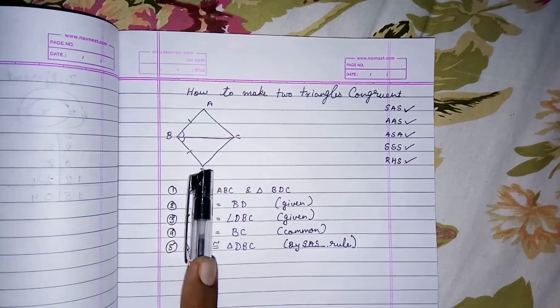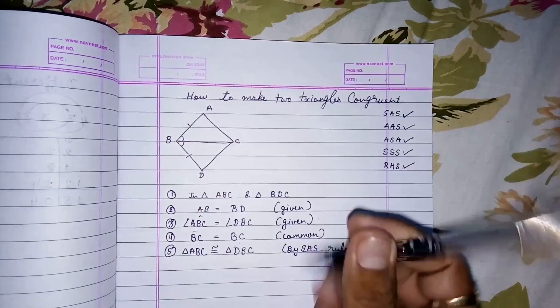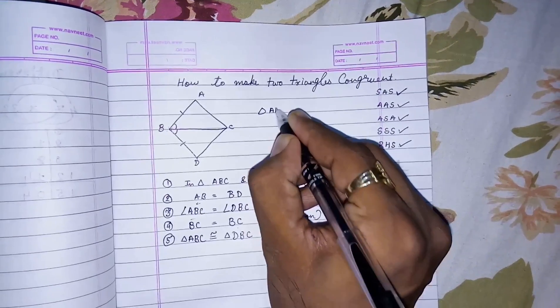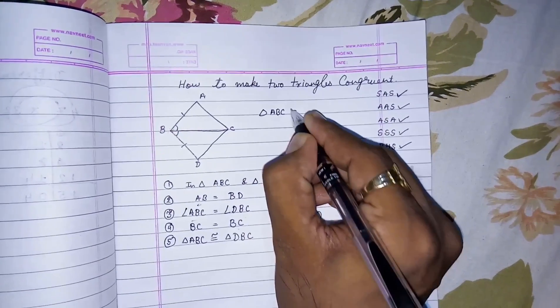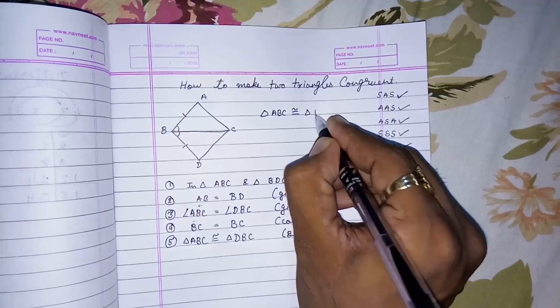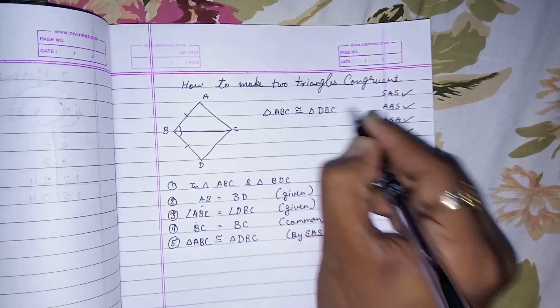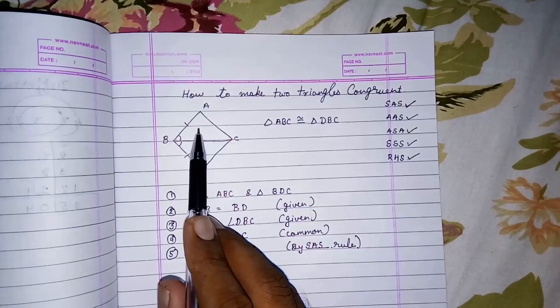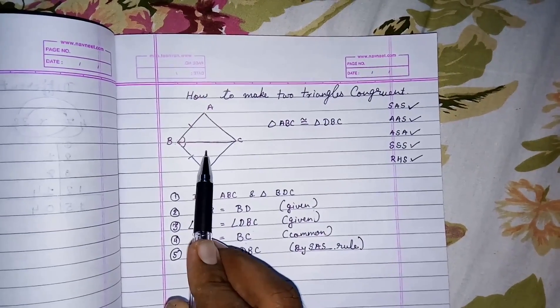Here they have given us two triangles. We have to prove triangle ABC congruent to triangle DBC. First we have to select the triangles to whom we have to make congruent.